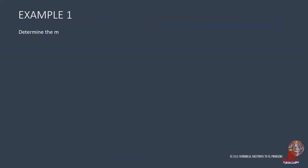The first example is to determine 4I minus 4A minus A squared plus A cubed with matrix A. With four terms in the statement, we evaluate each and sum up all four after. Starting with the determination of 4I.